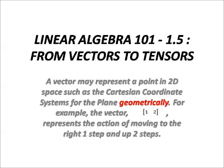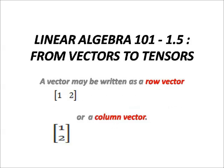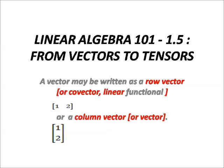A vector represents a point in 2D space, such as [1, 2] geometrically. In the Cartesian coordinate system, they can be presented as a row vector from left to right or a column vector from top down.